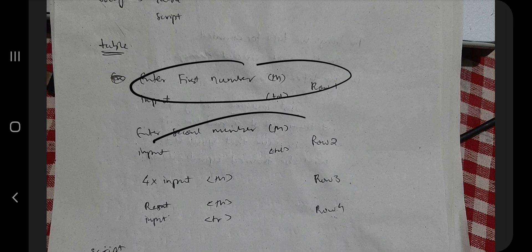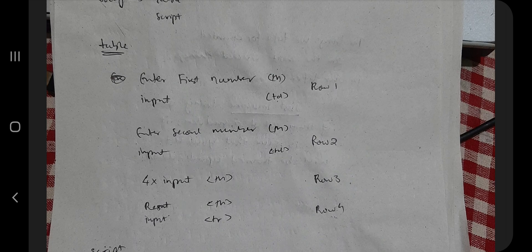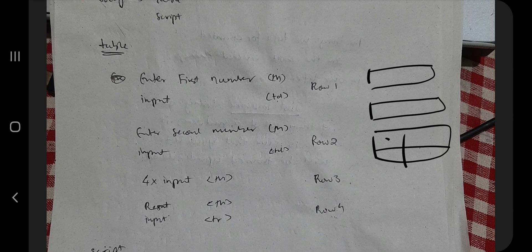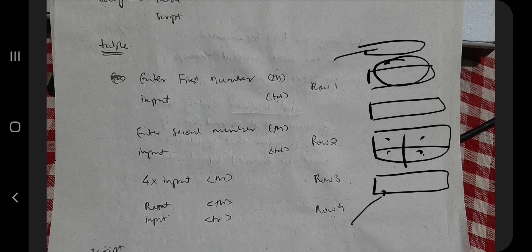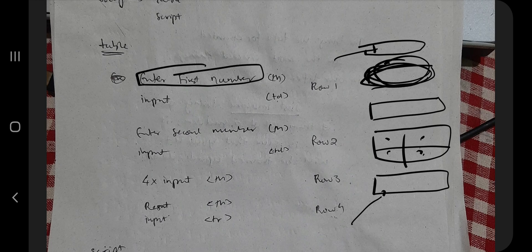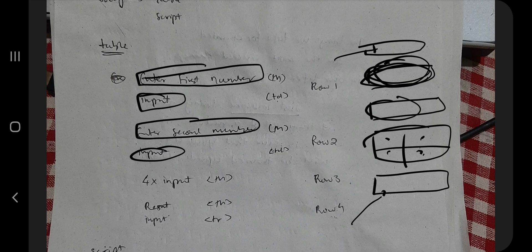Why four rows? The first row is to enter the first number, the second row to enter the second number, the third row will have four operator buttons (plus, minus, multiply, divide), and the fourth row will show the result. For the first two rows, we write the label text and an input of type number.